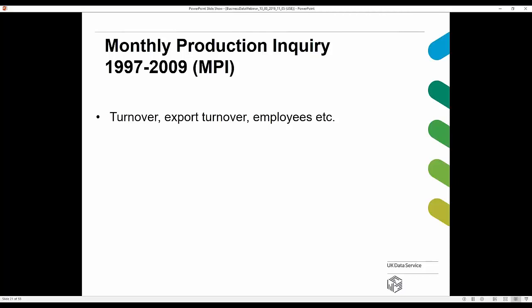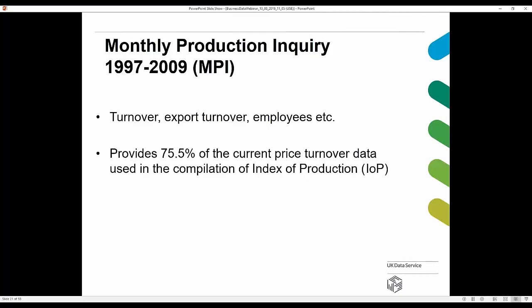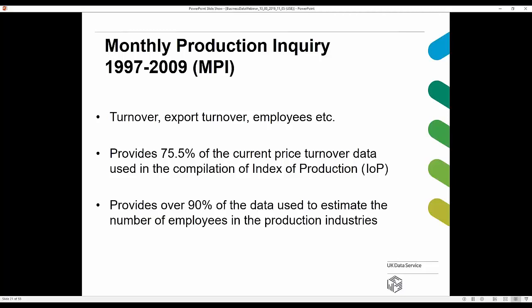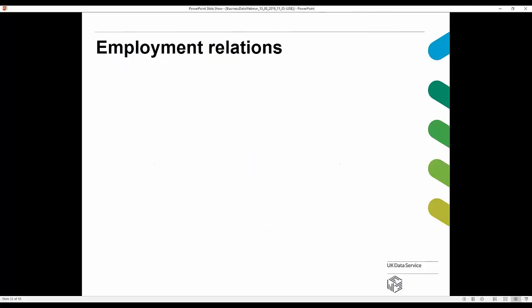The Monthly Production Inquiry has information on turnover, export turnover, and employees. It provides 75.5 percent of the current price turnover data used in compiling the Index of Production, and over 90 percent of the data used to estimate the number of employees in the production industries. It also provides 16.5 percent of the output measure of GDP.